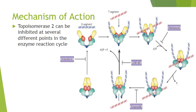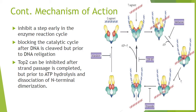A second mode of inhibition is blocking the catalytic cycle after DNA is cleaved but prior to DNA religation. This mode of inhibition occurs for most currently used topoisomerase-2 targeting agents including anthracyclines. These agents prevent enzyme turnover and therefore greatly inhibit the enzyme catalytic activity. However, the clearest effect is the generation of high levels of topoisomerase-2 DNA covalent complexes. Therefore, these inhibitors generate DNA damage and interfere with many DNA metabolic events such as transcription and replication.